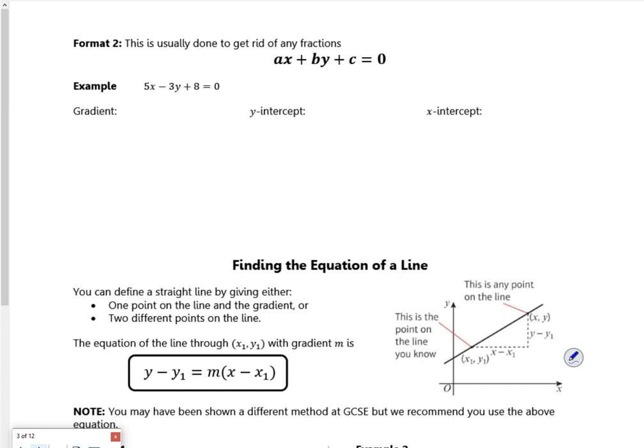Let's have a look at page 3. There's another form with x's, y's and numbers, like ax + by + c = 0. To find the gradient, I need to rearrange. Moving the 3y over, I've got 5x + 8 = 3y. Dividing by 3 gives the equation of the line. So my gradient is 5 over 3.